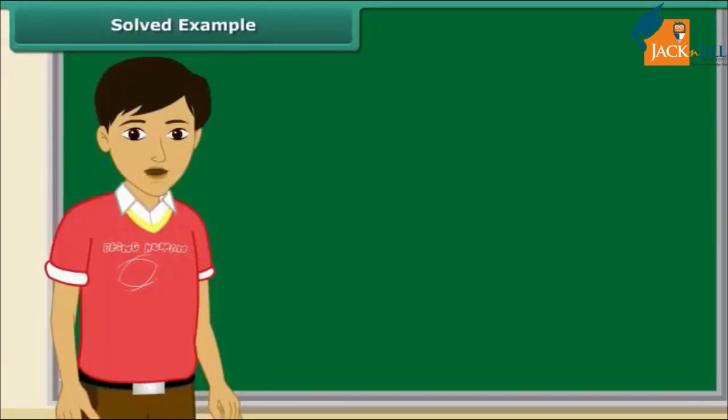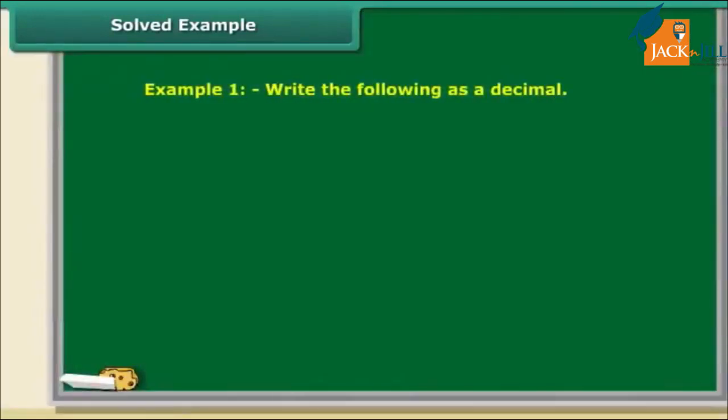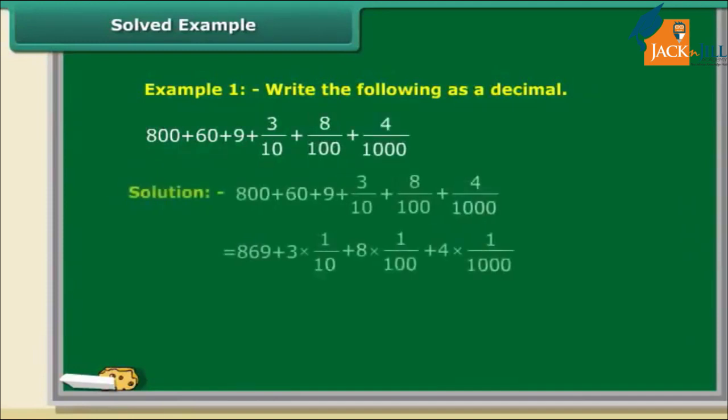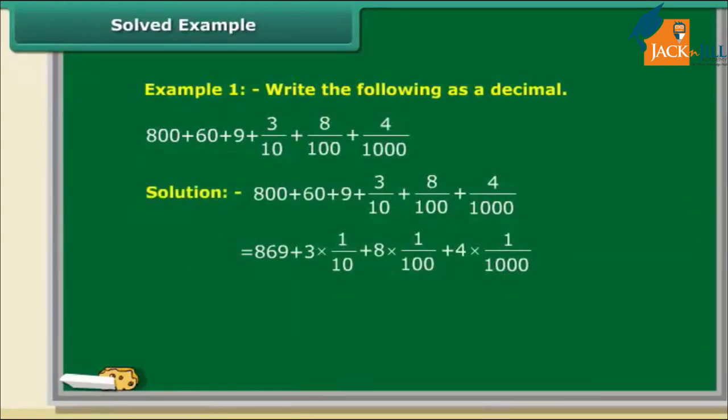Let us test our understanding by solving some questions. Write 800 plus 60 plus 9 plus 3 tenths plus 8 hundredths plus 4 thousandths as a decimal. 800 plus 60 plus 9 is 869. 3 tenths plus 8 hundredths plus 4 thousandths is 0.3 plus 0.08 plus 0.004 which adds up to 0.384. So, the answer is 869.384.